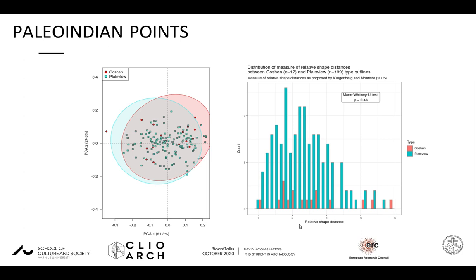On first sight, on the scatterplot of the first principal component scores, it becomes apparent that the specimens of the two types overlap to a very large extent. We conducted a permutational MANOVA on the first six PC scores, which led to a non-significant result, indicating that the two group means are the same. We further calculated the measure of relative shape distance as proposed by Klingenberg and Monteiro in 2005, which also led to the result that both groups cannot be distinguished from one another.